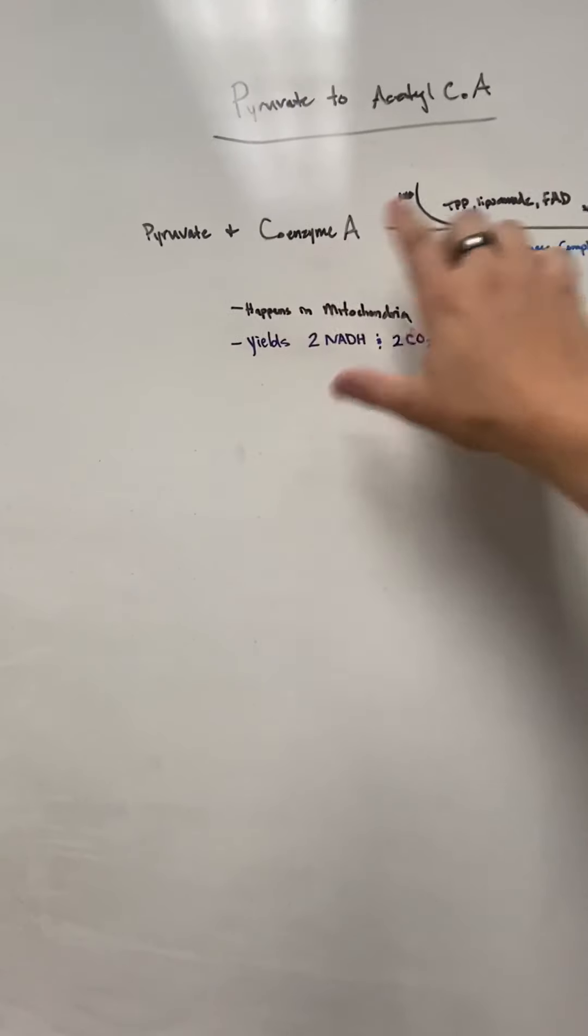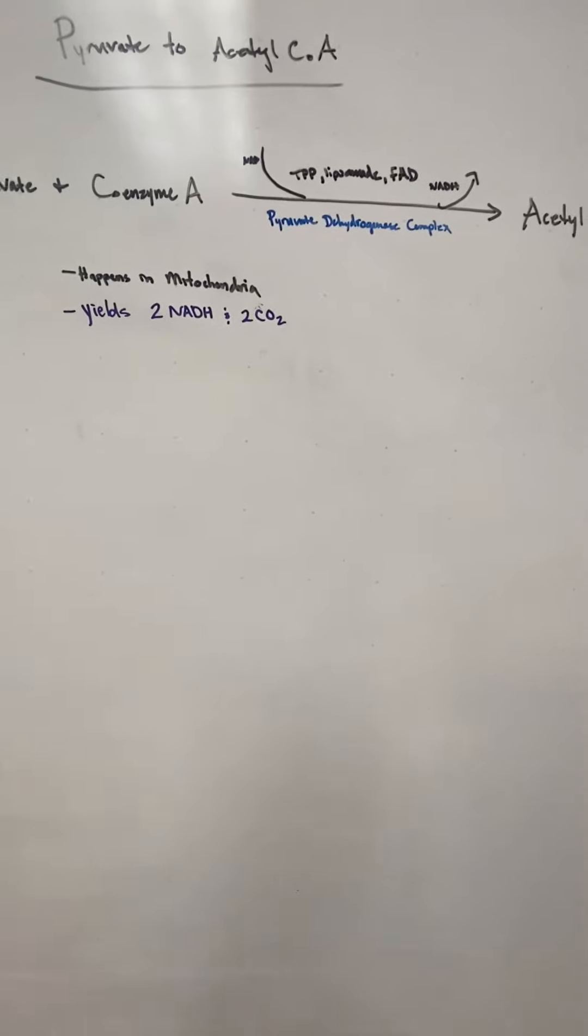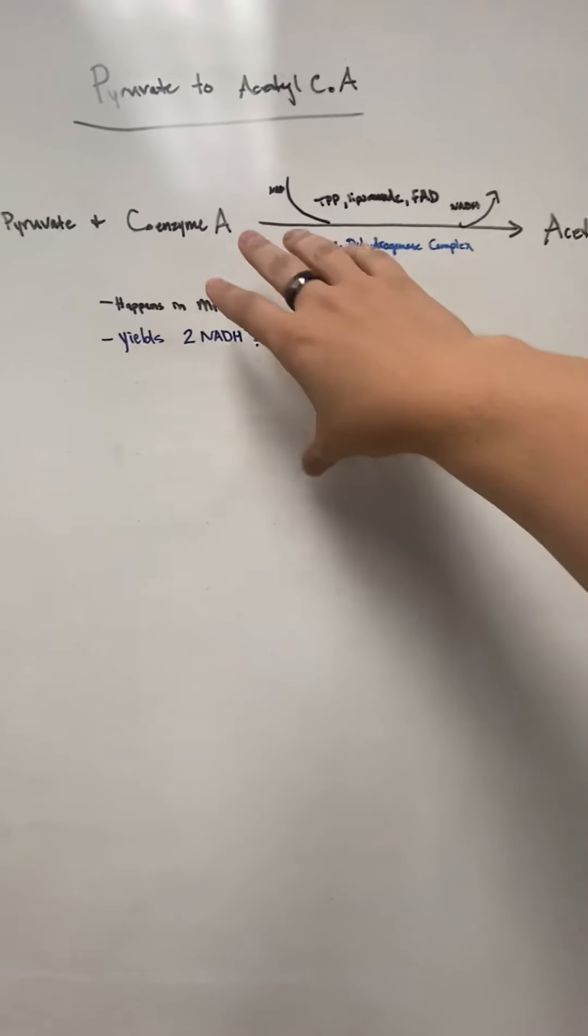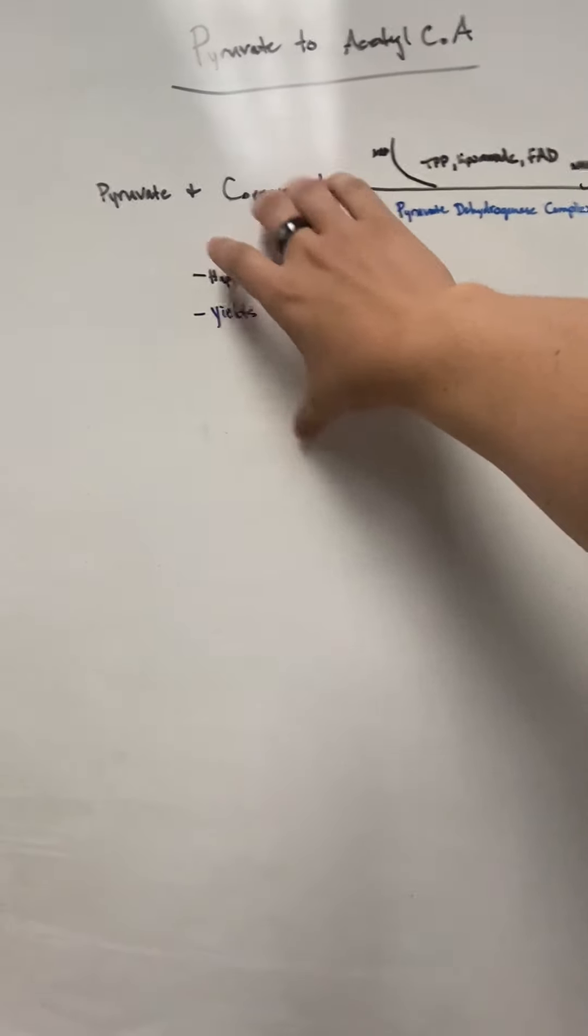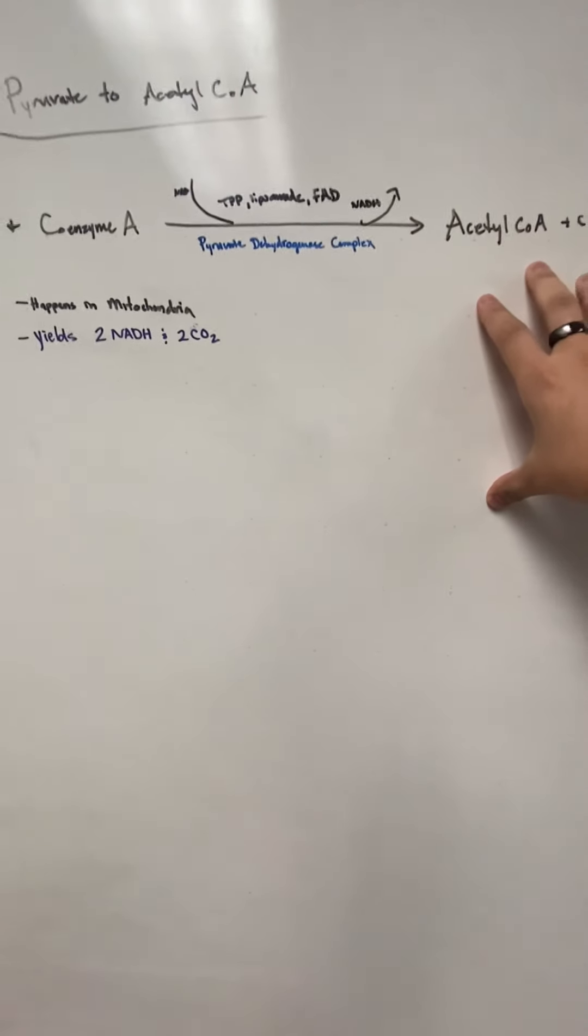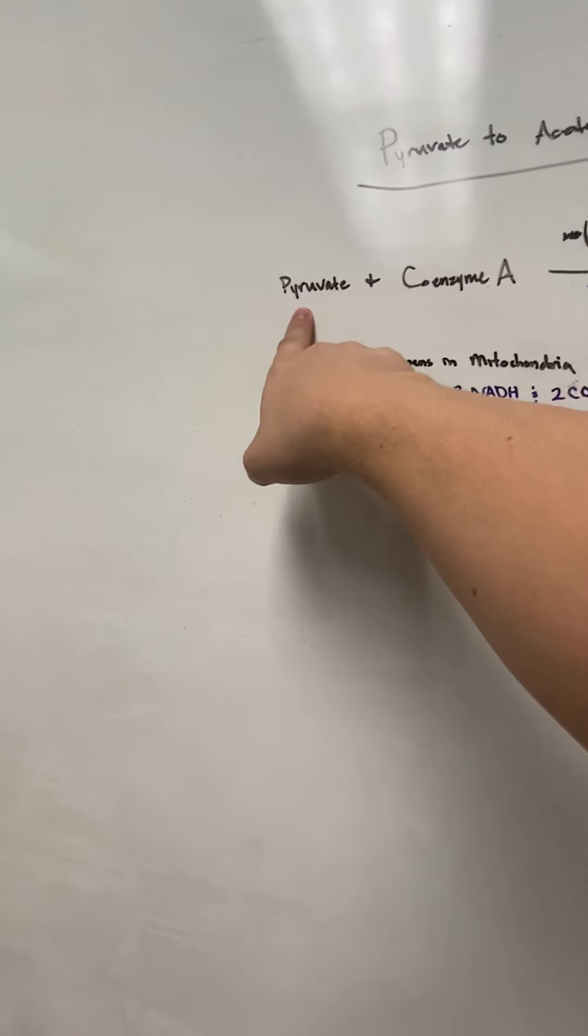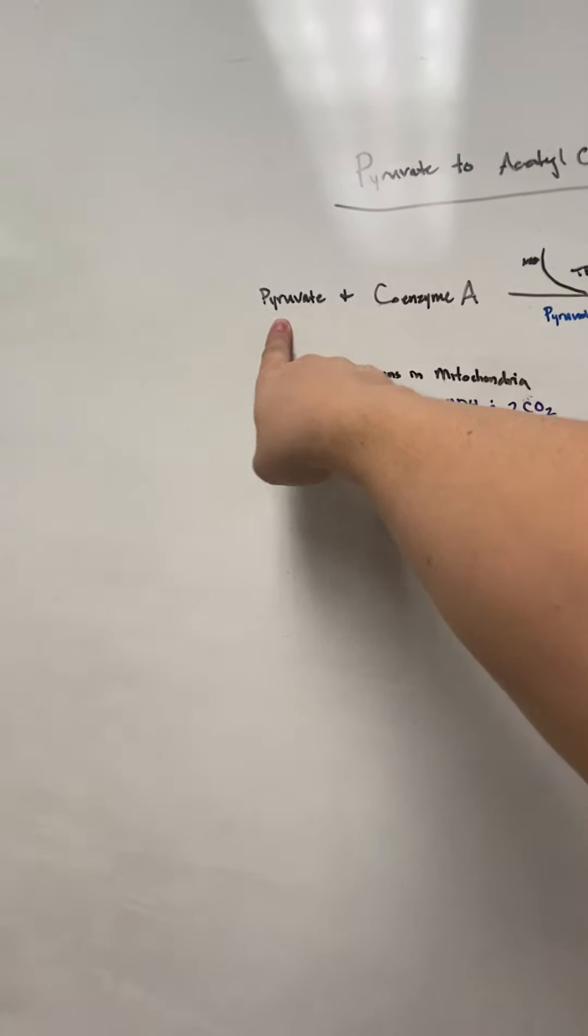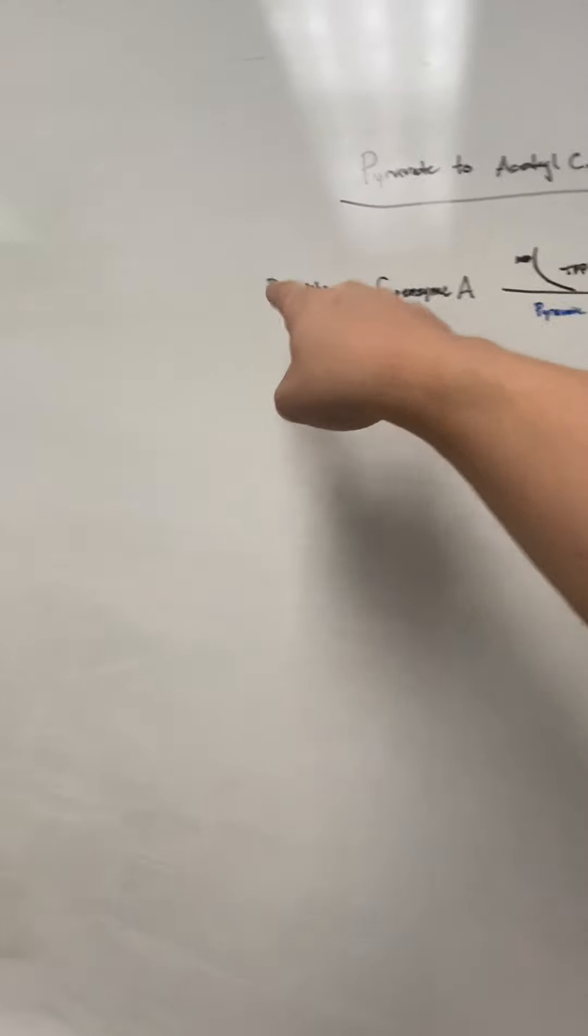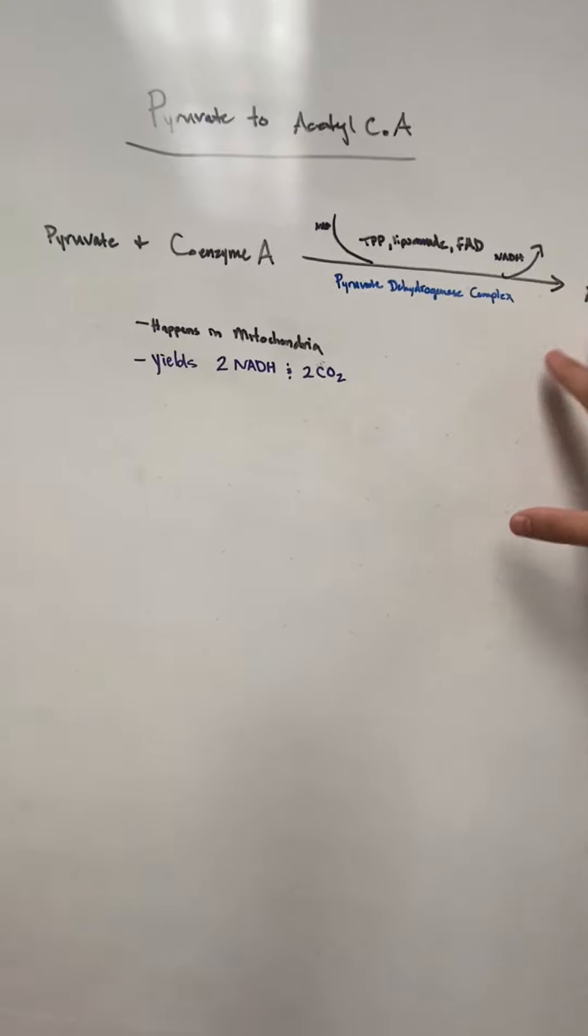Pyruvate has a couple enzymes, and it's called the pyruvate dehydrogenase complex. It has a bunch of stuff in it which turns pyruvate into acetyl-CoA. The biggest things to remember are that glycolysis is done in the cytosol, but pyruvate has to move into the mitochondria to be able to have acetyl-CoA be produced.